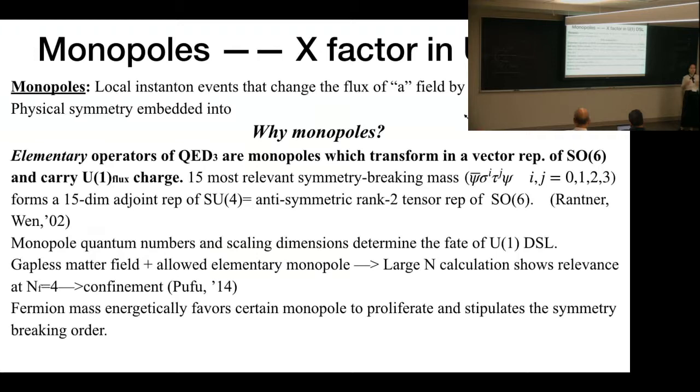Monopole is—in 2+1D—an instanton event that changes the total flux of the small A-field by multiples of 2π.